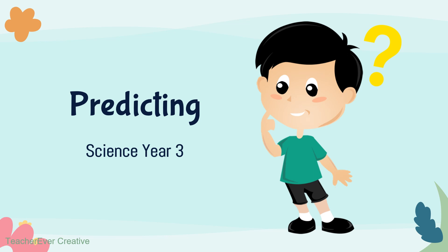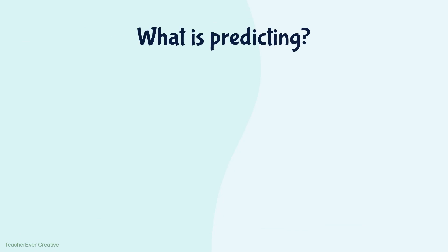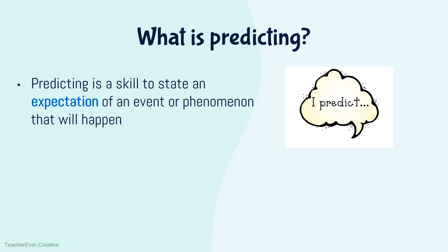Good day everyone. Today we are going to learn about predicting. What is predicting? Predicting is a skill to state an expectation of an event or phenomenon that will happen. In simple words, making a prediction means what do you think will happen.